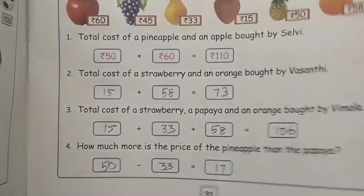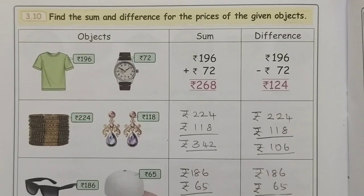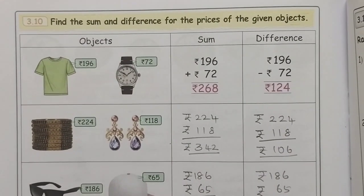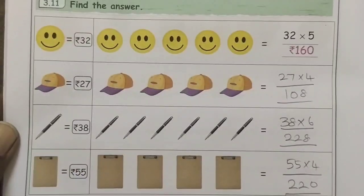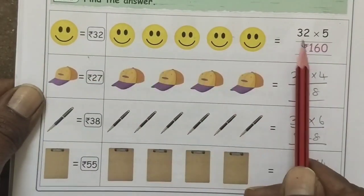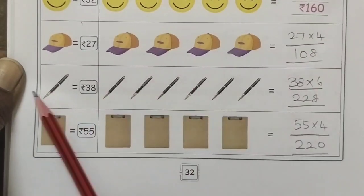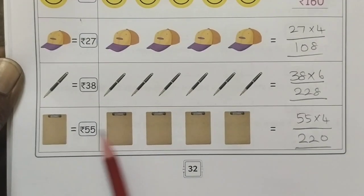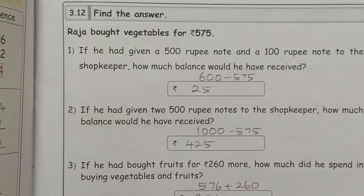The next one: calculate the sum and difference of these two objects. The prices are given; find the difference and subtract. Then the multiplication is 33, 32, and the difference results are 37, 38.